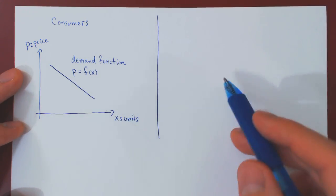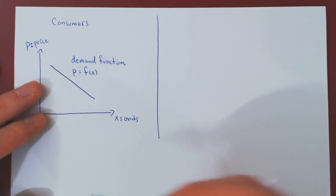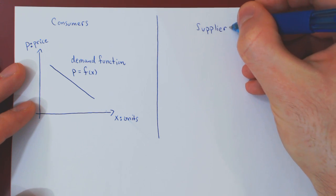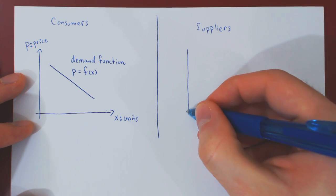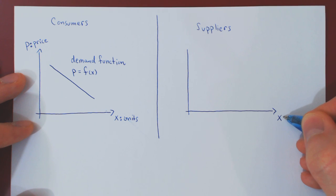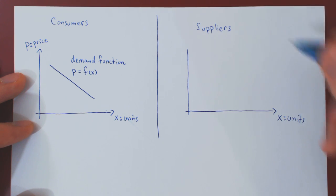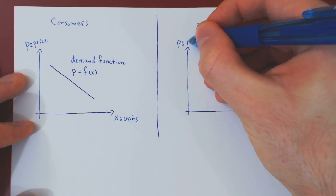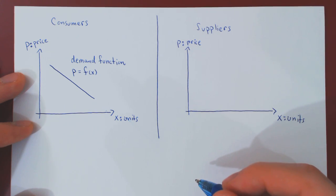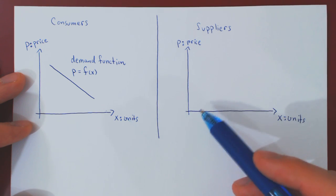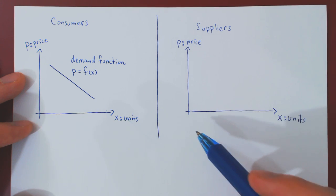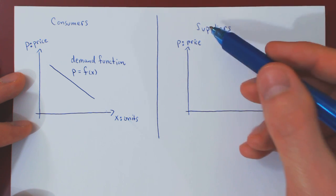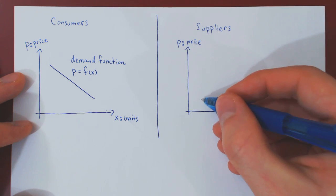Let's look at the same scenario, but now from the perspective of suppliers. Again, we look at the relationship between the price of a single unit and X, which is now the number of units that a supplier is willing to supply to the consumers. P, as before, is the price of a single unit. And of course the relationship will be a positive one. We assume a positive relationship between X and P: the higher the price, the larger number of items suppliers are willing to supply to consumers — willing to sell. So we have a positive relationship.